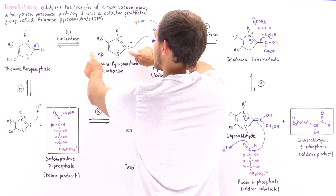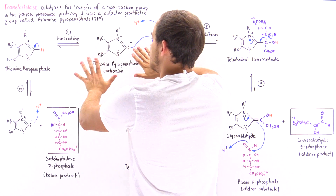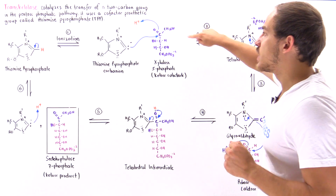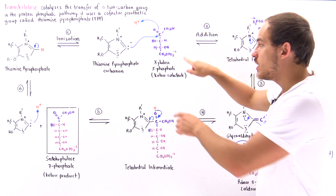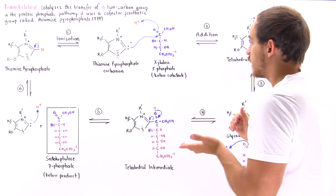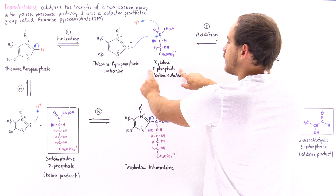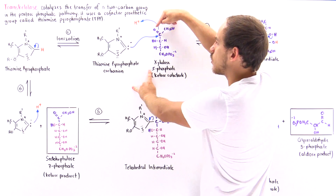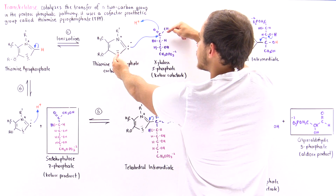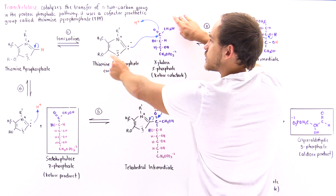As a result of the two electrons on this carbon atom, it becomes a good nucleophile and strongly attacks the electrophile — the keto substrate. In this case we're using xylulose-5-phosphate. The carbon of its carbonyl group acts as the electrophile, and a bond is formed between it and the carbon of the thiazol ring.